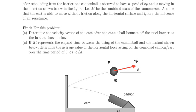We're asked to let M represent the combined mass of the cannon and the cart, and to assume that the cart is able to move without friction along the horizontal surface, and that air effects can be neglected.